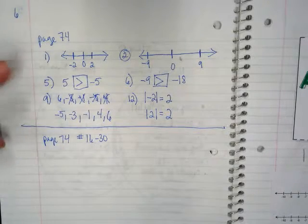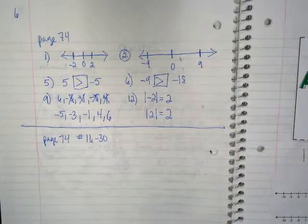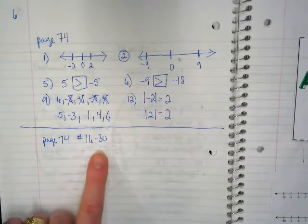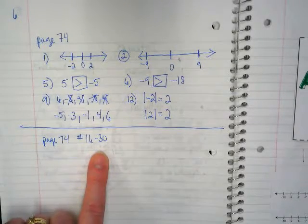On the left on page six after we completed page seven you did some practice. Page 74 we did these together and then you were supposed to do 16 to 30 on your own.